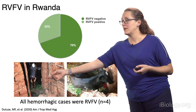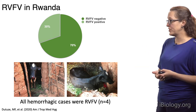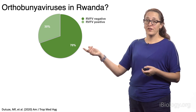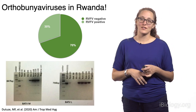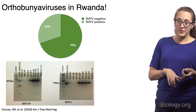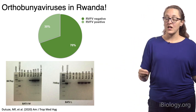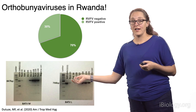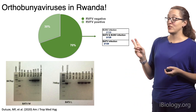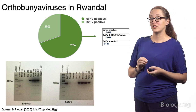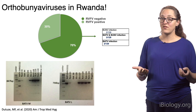Here you see a cow with obvious hemorrhaging from its nose. We decided to test the Rift Valley Fever-negative cases for our orthobunyaviruses of interest, and we found two of them. Even though ngari is a reassortant of bunyamwera and batai, the way we designed our diagnostics allowed us to distinguish between ngari and the other two viruses. We found two infections of bunyamwera, three co-infections of bunyamwera and batai, and two infections of batai alone — seven total cattle showing that these viruses are, in fact, circulating.